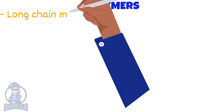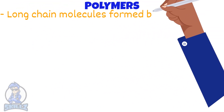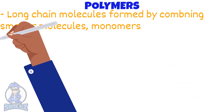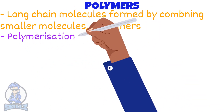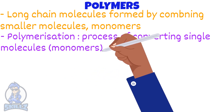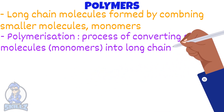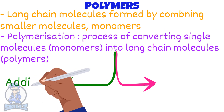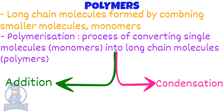A polymer is a long chain molecule formed by combining smaller molecules called monomers. Polymerization is the process of converting single molecules to long chain molecules. There are two types of polymerization: addition and condensation. This video is focused on addition polymerization.